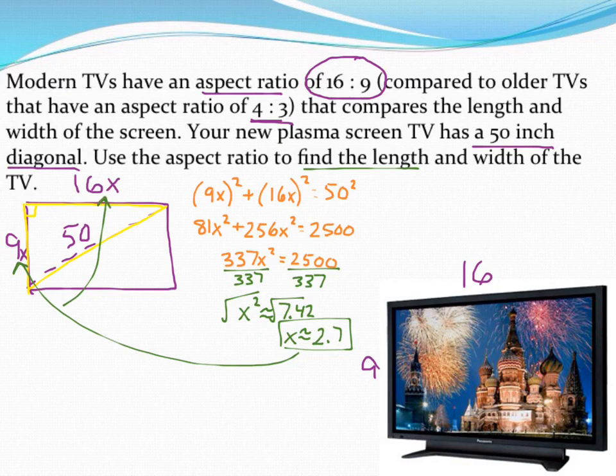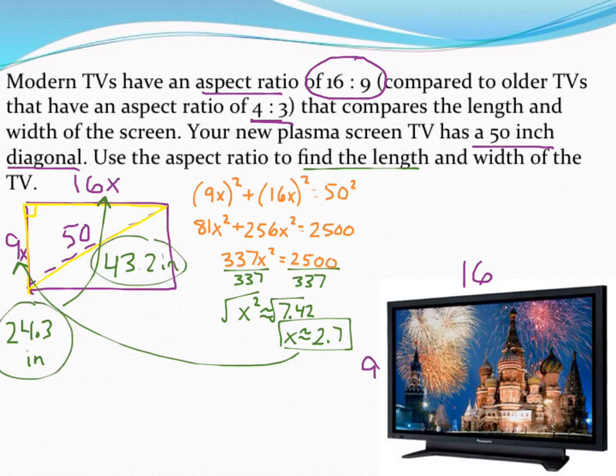So doing 9 times 2.7 gets me a height, width or length, whatever you want to call it, of about 24.3 inches for the vertical side. 16 times 2.7 gets me a length of the TV of about 43.2 inches. So there's my length. There's my width.